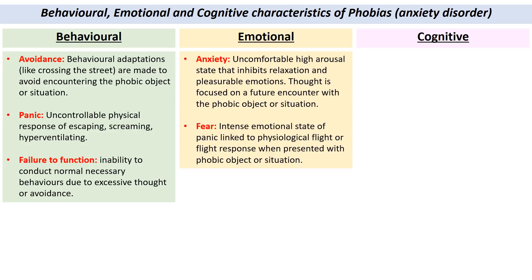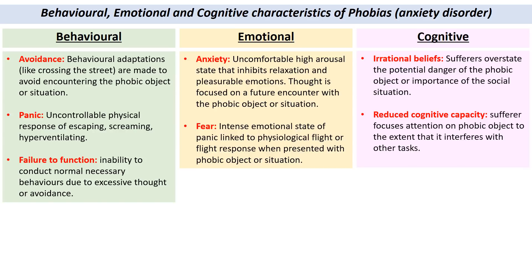On to the cognitive characteristics, which are thought processes. First, irrational beliefs. Sufferers are likely to really overstate the importance of a social situation, feeling that if they say or do something wrong it might have long-lasting implications. Or they may feel that a spider is far more dangerous than it really is. They hold irrational beliefs around their phobic object or situation. Because a person with a phobia focuses so much attention on phobic objects, they're not able to engage in day-to-day life in the same way — interrupting their ability to focus at work and conduct other tasks. We'd state this as reduced cognitive capacity.